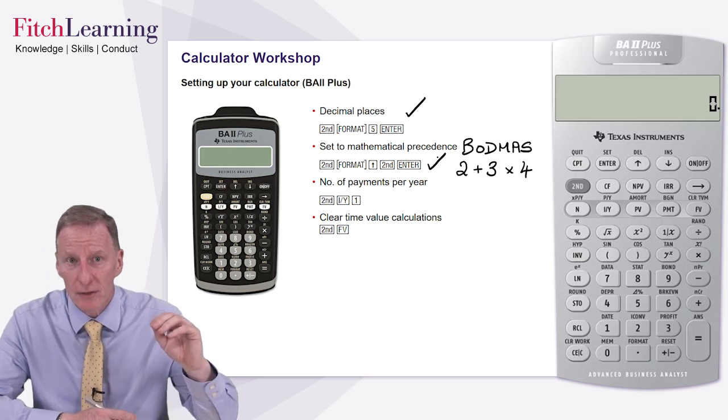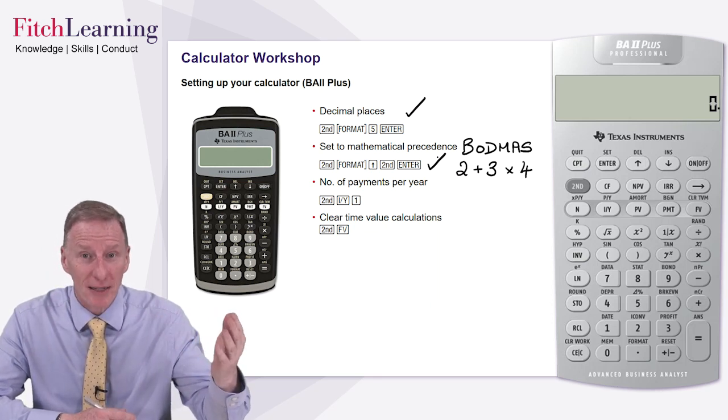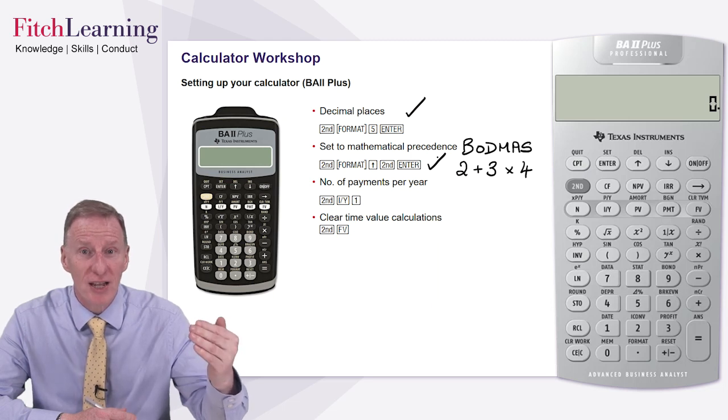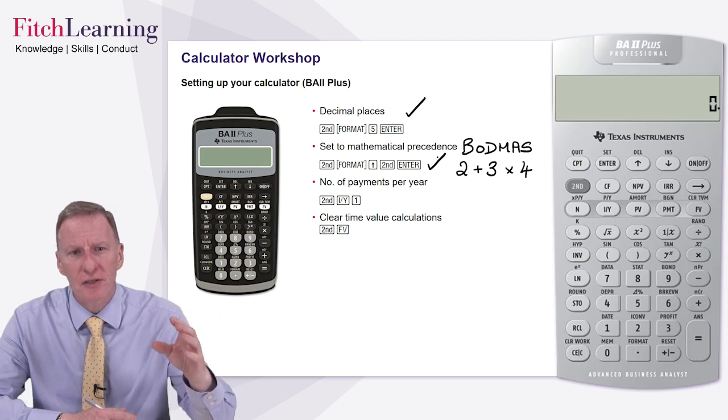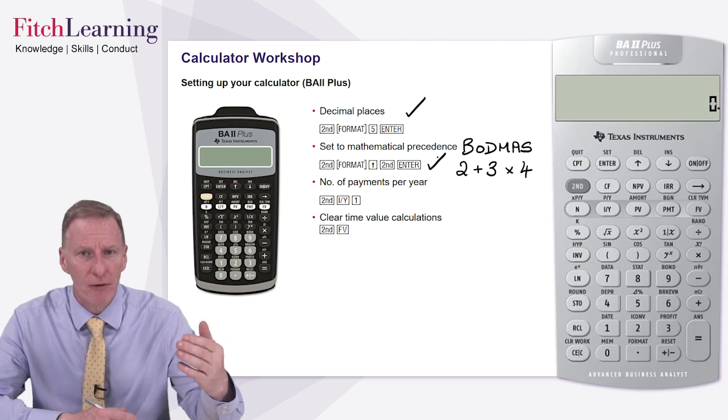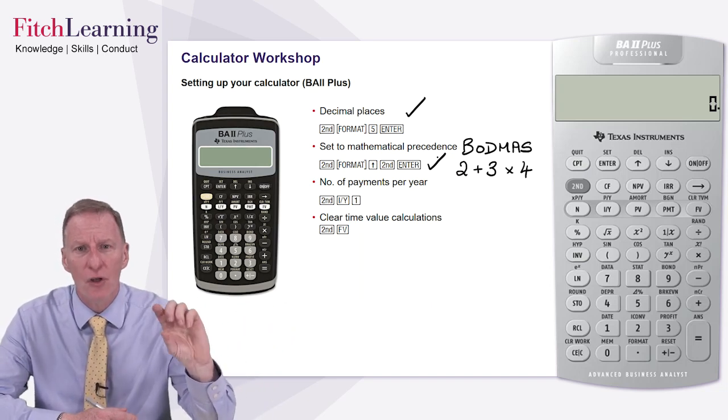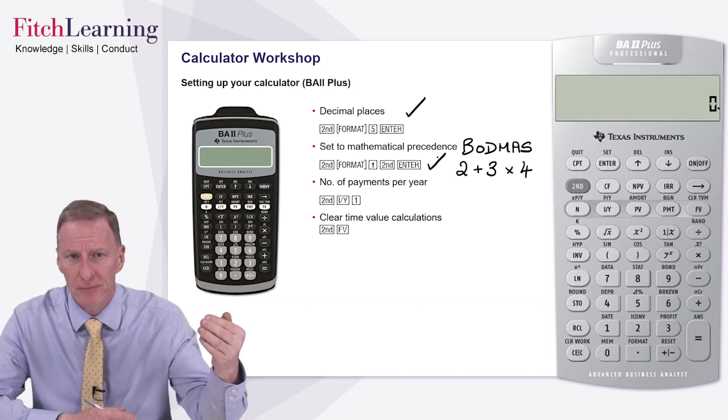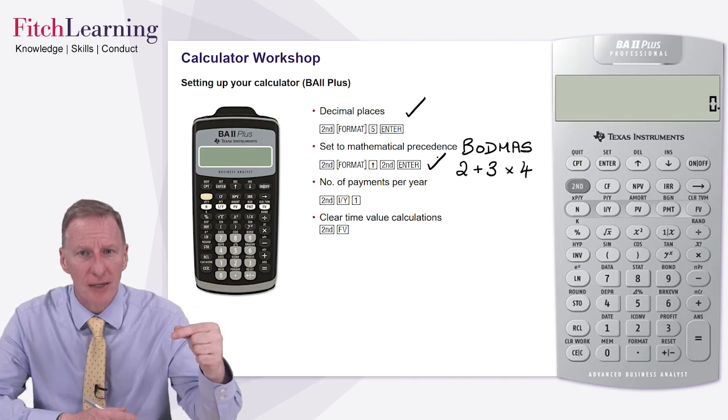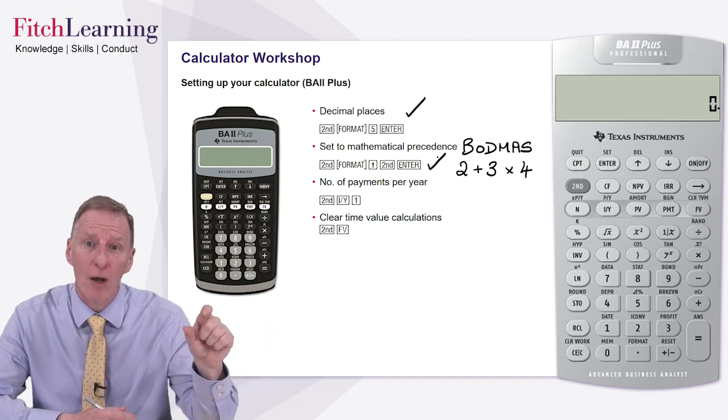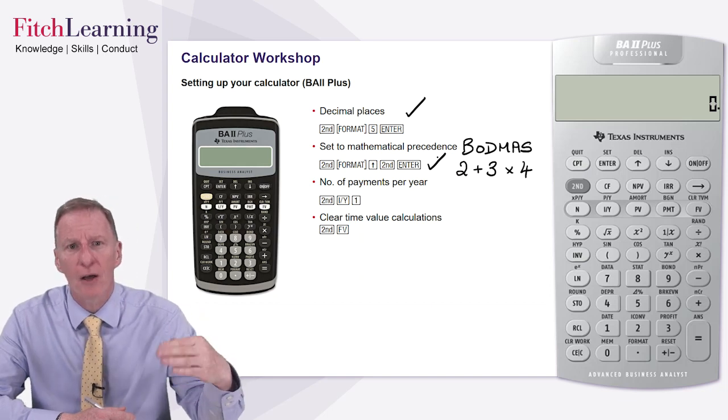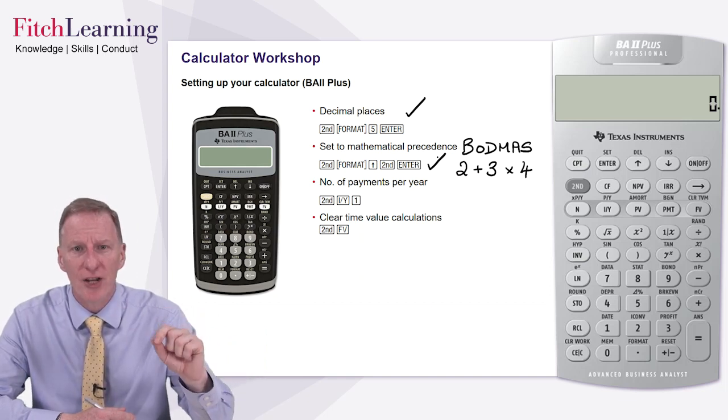The third change actually is a change we may not have to make, because I have to say, in many cases, the pre-setting will already be correct, but we need to check. And what we need to ensure is that for any given period, and notice I said period rather than year, so a period could be a week, a month, a quarter, a half year, and so on, that the calculator only does one interest calculation iteration. There is a danger in some cases that it may be set up to presume that we have a 12-month year with 12 interest calculations rolling over within that period.